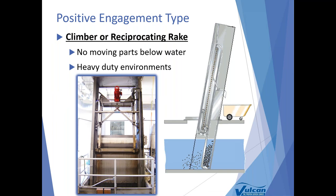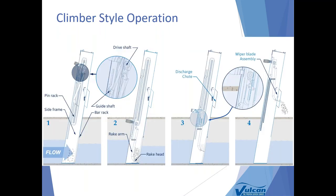The first type of positive engagement screen is a climber or reciprocating rake type screen — a single rake arm design that's been around quite a while and still represents about 20% of Vulcan's business. A key advantage is no moving parts below the water surface, with the rake head returning above the channel for service and maintenance after each cleaning stroke. When the screen is called to run — whether by differential, floats, or timer — the single rake arm travels to the bottom of the screen via a drive shaft with a cog wheel on either end, walking up and down a pin rack. It then removes material, discharges it, parks, and waits until called to run again.